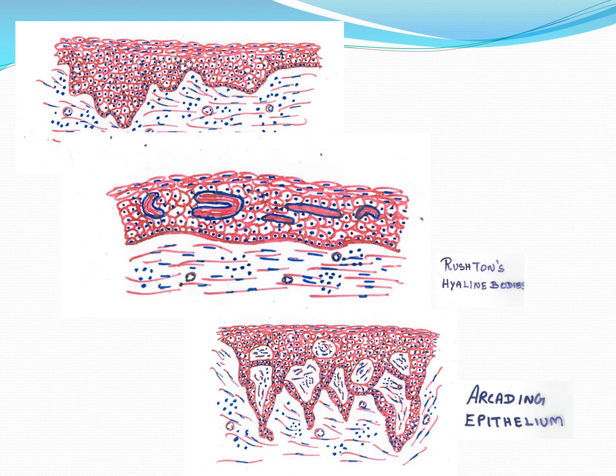Now we will move on to the microscopy. Once the cyst has formed, microscopically the radicular cyst consists of an epithelial lining and a connective tissue wall.